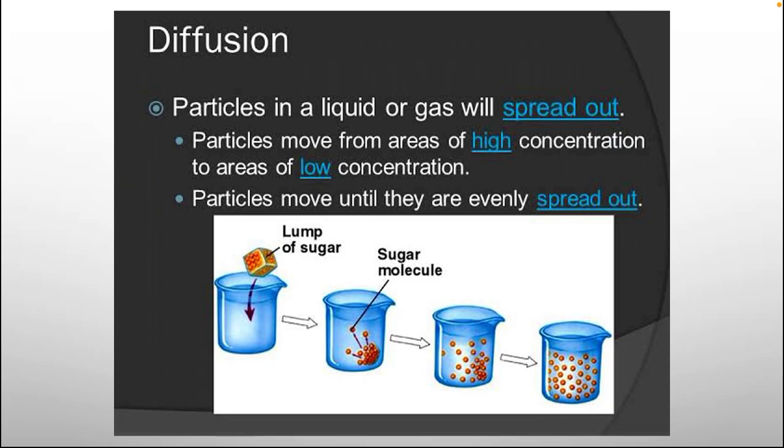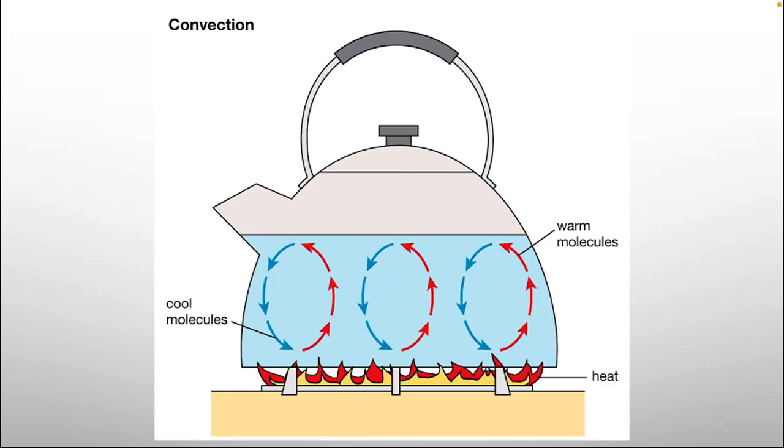Diffusion. Particles in a liquid or gas will spread out. Particles move from areas of high concentration to the area of low concentration. Particles move until they are evenly spread out. So, lump of sugar is inside the water. Sugar molecules now then dissolve. And then highly concentrated particles move to the less low concentration diffusion. And the last process is convection, where the warm molecules revolve to the cool molecules. And this is how our tea kettle works.